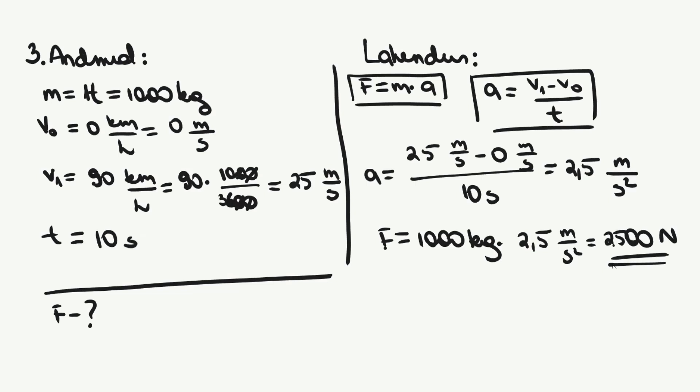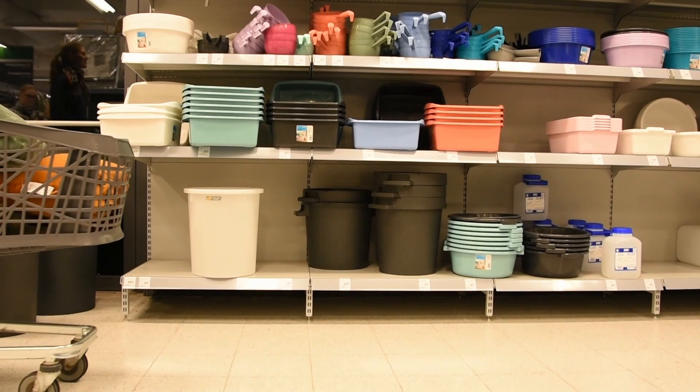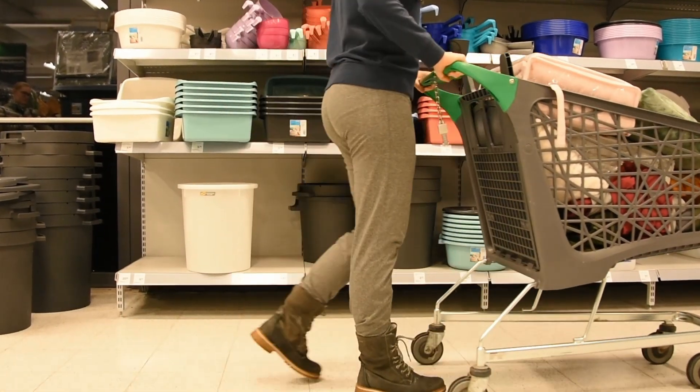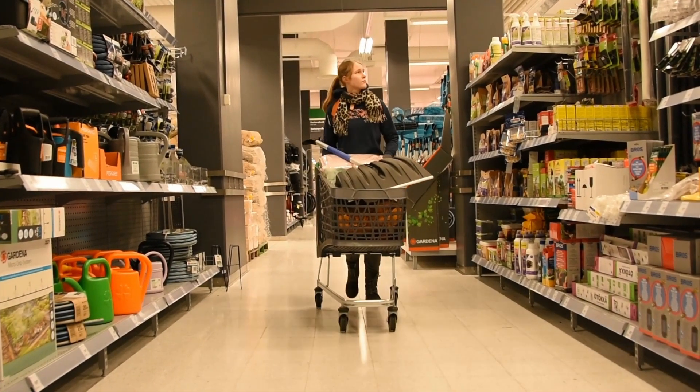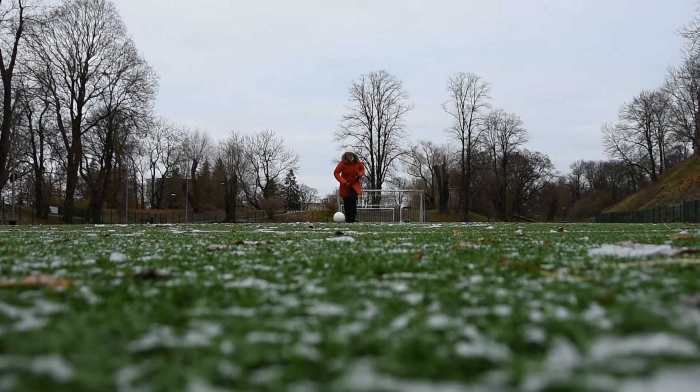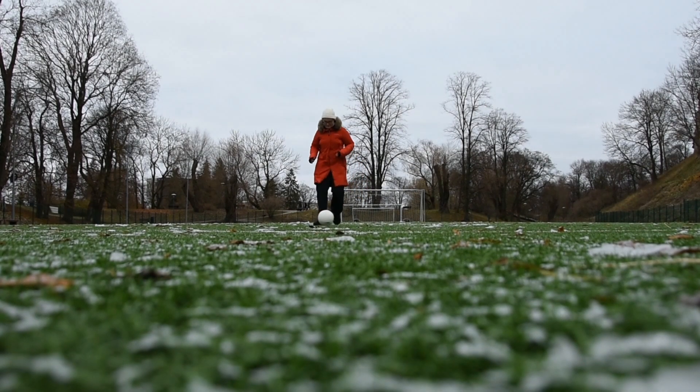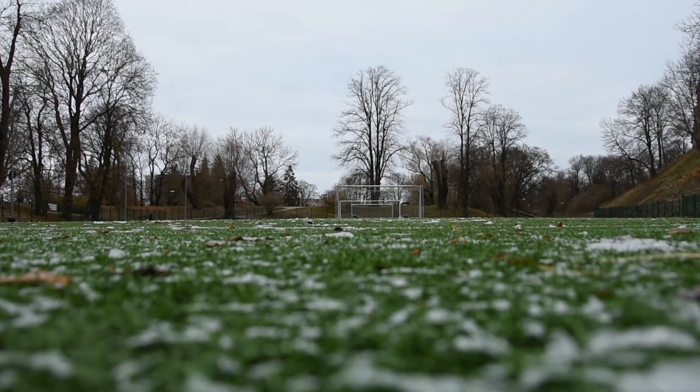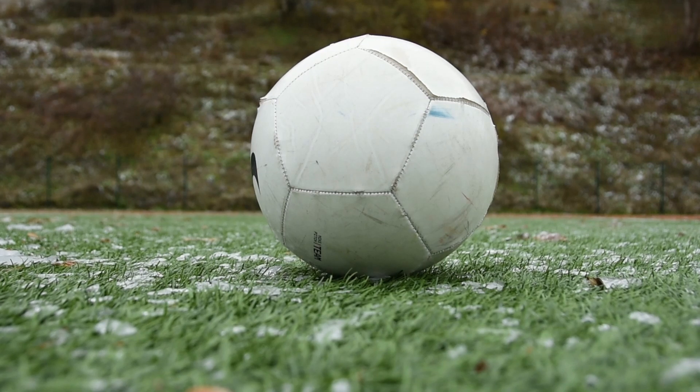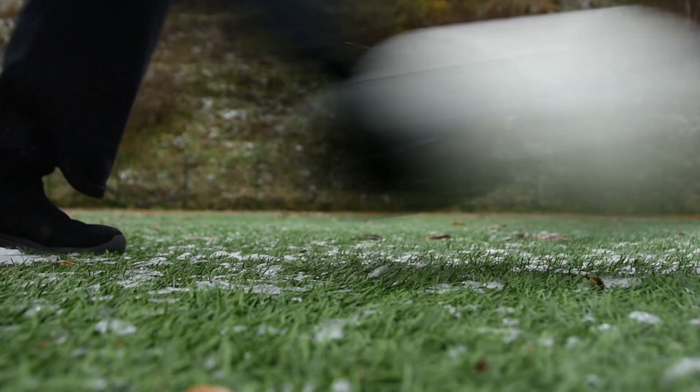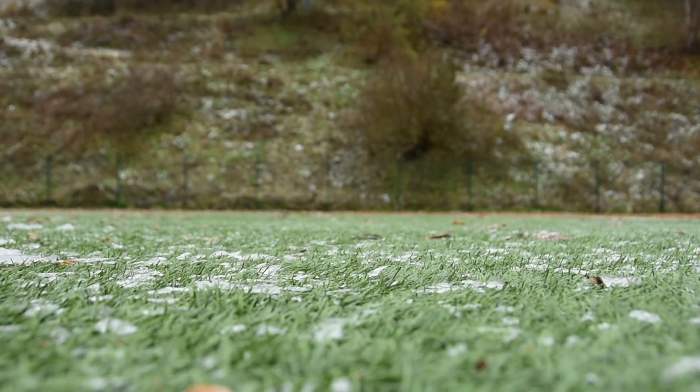Dünaamika seaduse rakendumist on näha peale ülesannete ka igapäevaelus. Täis ostukäru on raskem edasi lükata kui tühja, sest täis käru mass on suurem. See tähendab, et käru lükkamiseks on vaja rohkem jõudu. Kui palli lüüa, avaldatakse jõudu konkreetses suunas. Sellises suunas pall ka liigub. Peale löömist tekib pallile kiirendus. Kiirendus on otseselt proportsionaalne rakendatud jõuga. See tähendab, mida tugevamalt palli lüüa, seda kiiremini see liigub.